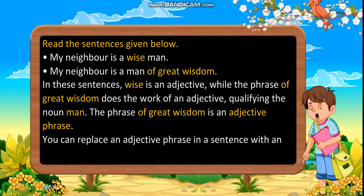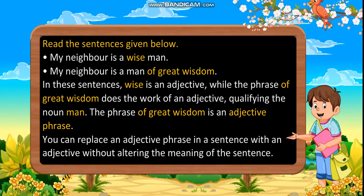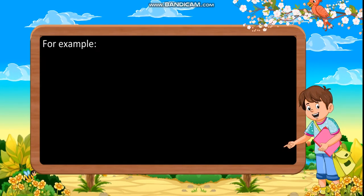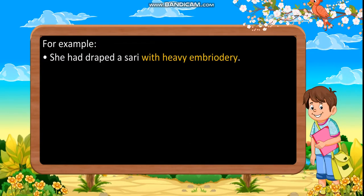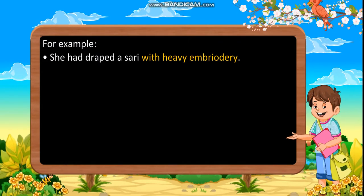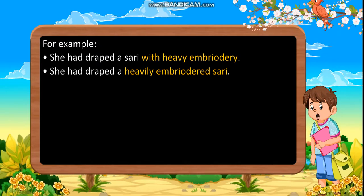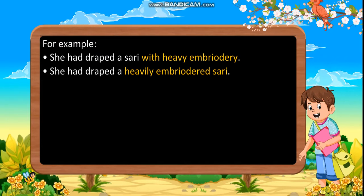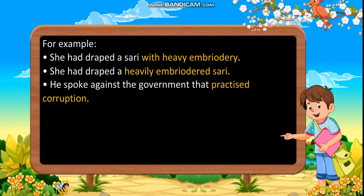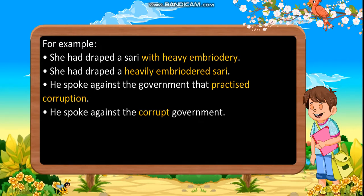You can replace an adjective phrase in a sentence with an adjective without altering the meaning. For example: 'She had draped a saree with heavy embroidery' becomes 'She had draped a heavily embroidered saree.' 'He spoke against the government that practised corruption' becomes 'He spoke against the corrupt government.'